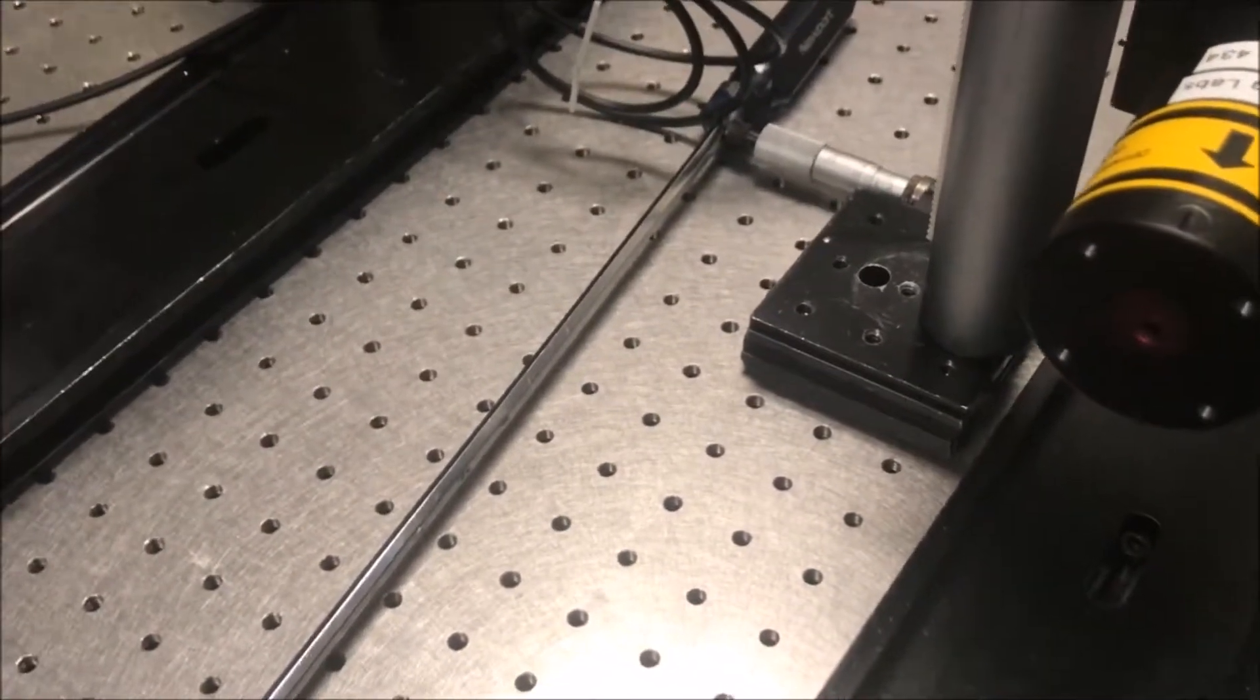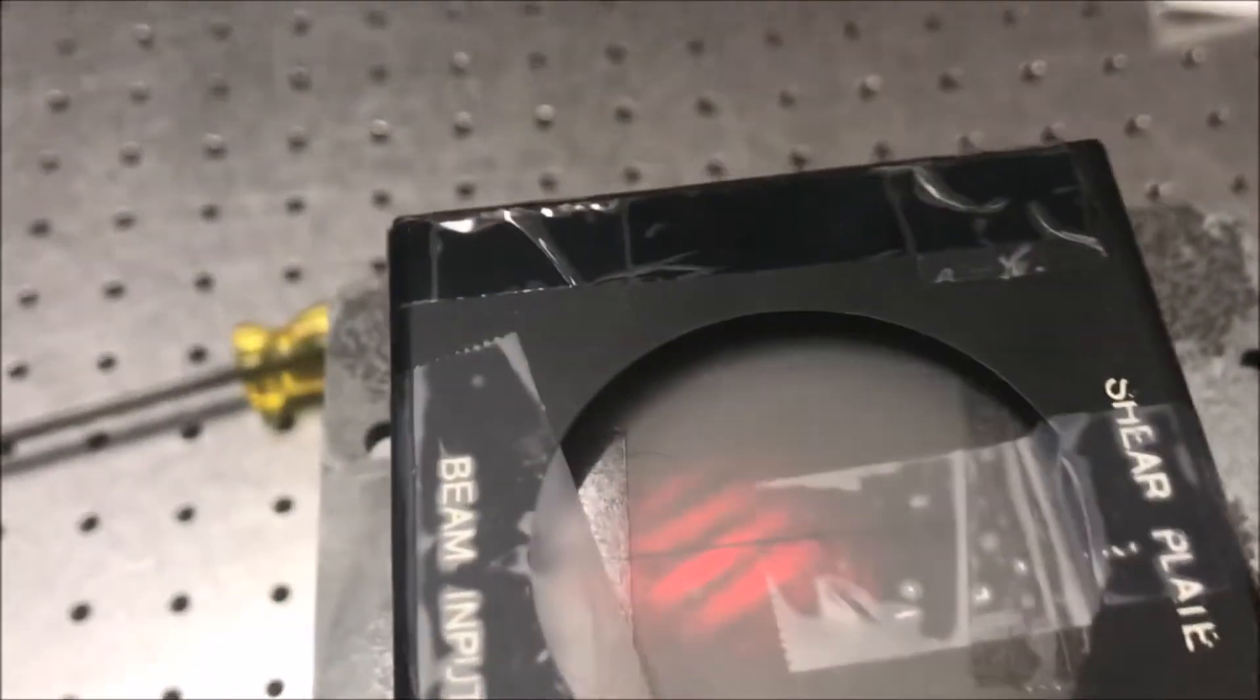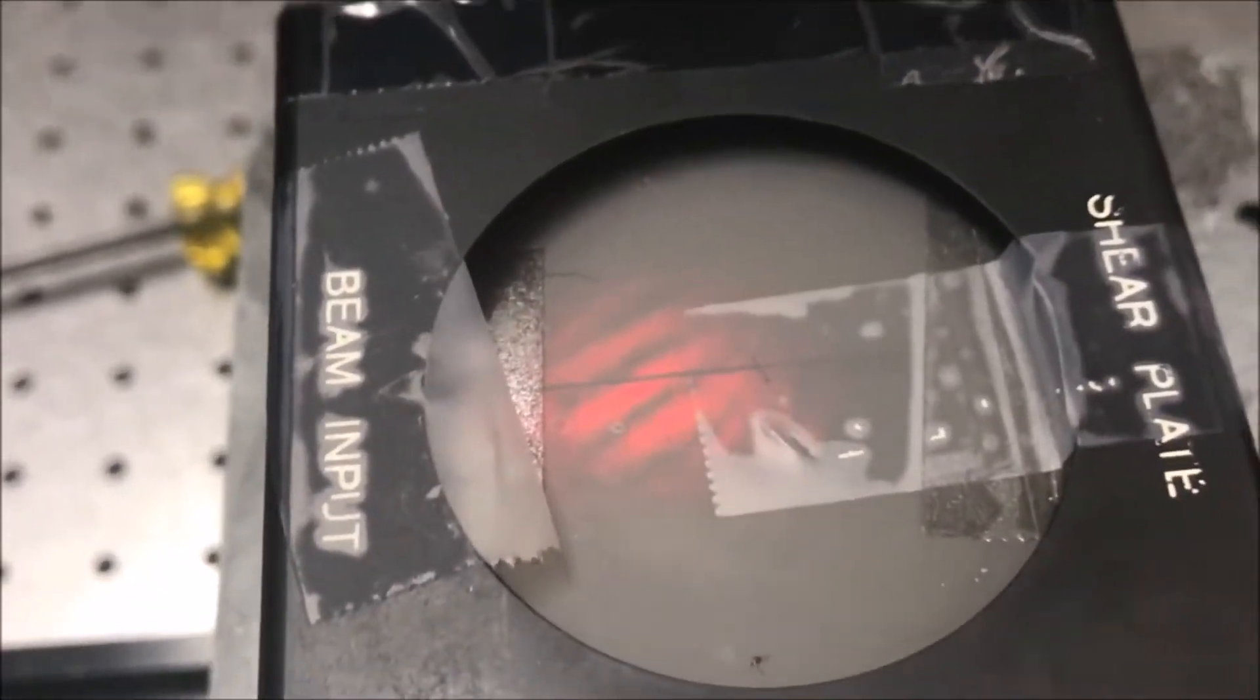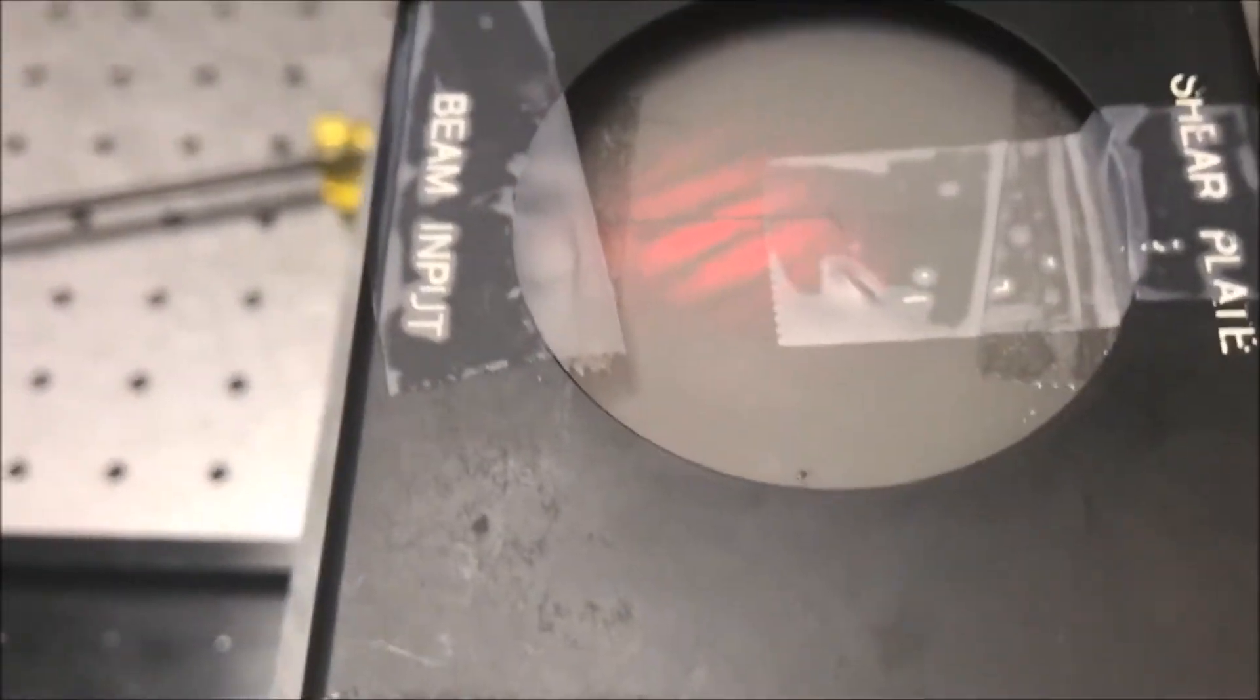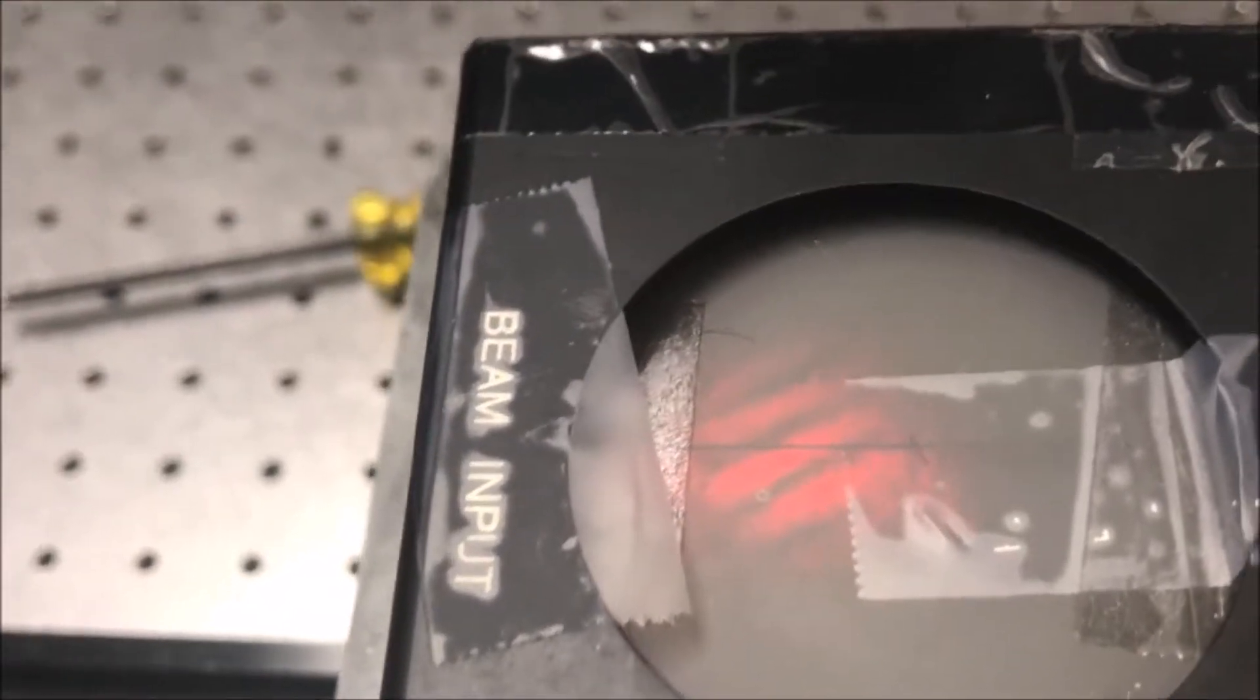We were able to check our collimation of our telescope by using the shear plate, which shows appearance patterns when you know you're collimated, if you're seeing the straight fringes as you're seeing.